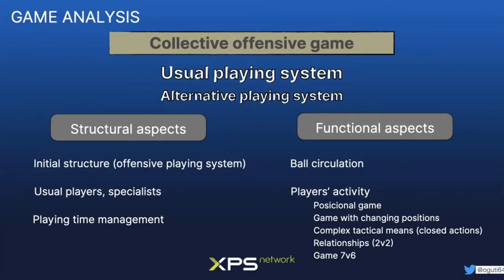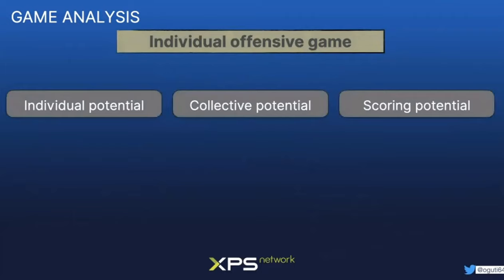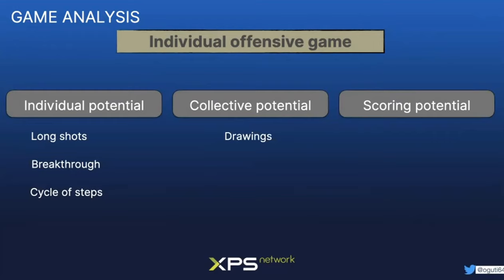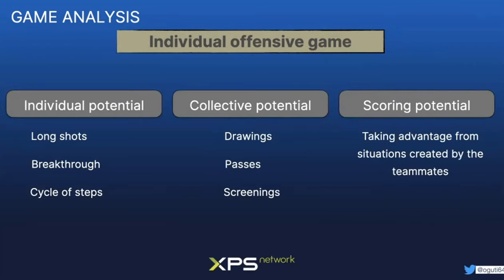It's also important to characterize the individual behavior of players. We focus on three aspects: individual potential, collective potential, and scoring potential. Individual potential covers whether the player can shoot from middle range, skill in breakthrough, and cycle of steps. Collective potential is the capacity to draw defenders, the type of passes, and screenings. Scoring potential is whether the player is able to take advantage of situations created by teammates.